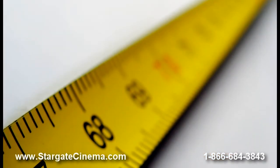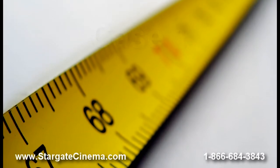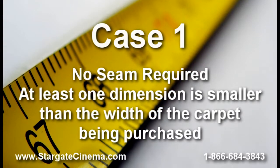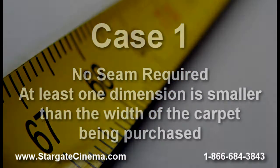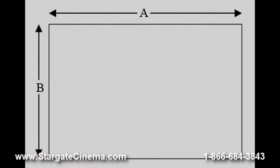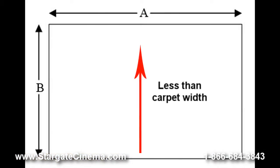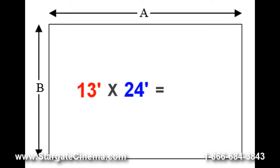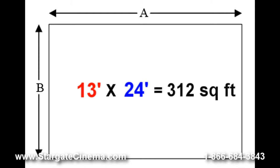We will now walk you through a step-by-step guide to calculate exactly how much carpet you will need to order. Case number one: a basic measurement where no seam is required. Let's take a look at how to determine how much carpet you will need if at least one dimension — the length or the width — is less than the width of the roll. Let's say you have a home theater room that is 13 feet by 24 feet. We take those two dimensions and multiply them together to get the total square feet of the theater room: 13 times 24 is 312 square feet.